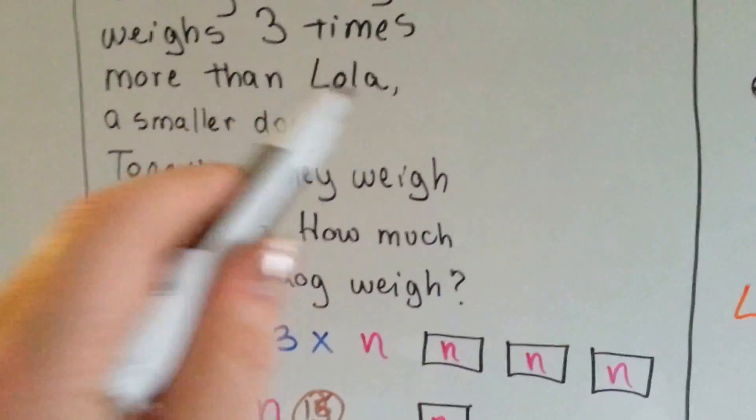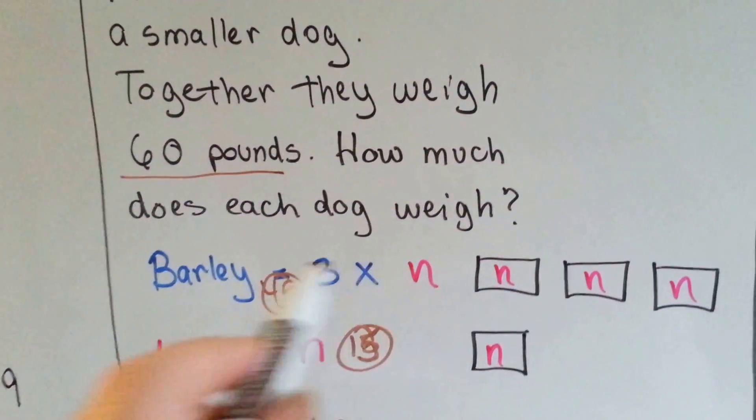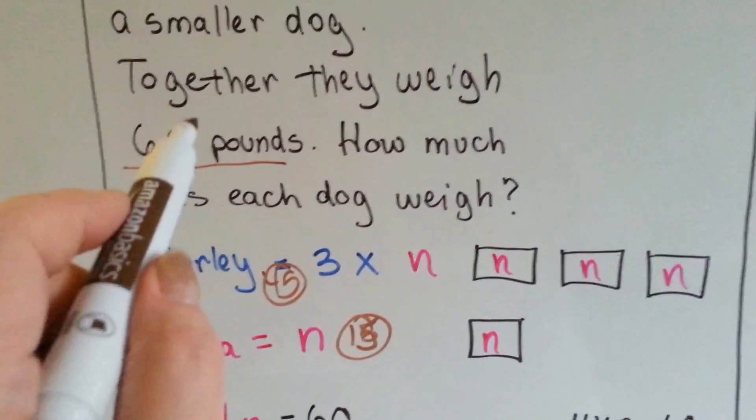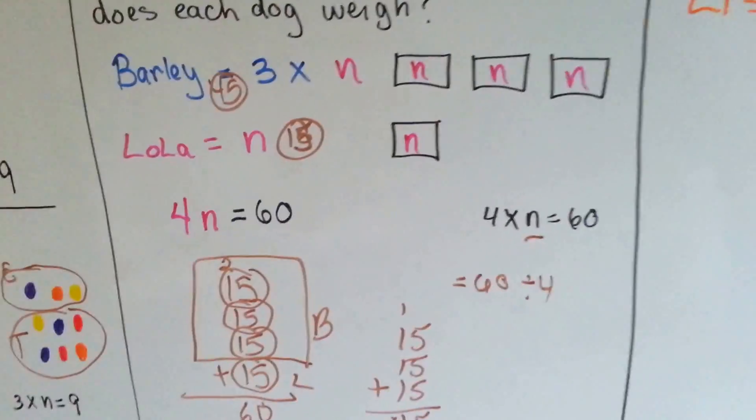It said Barley is three times, and Lola is just one times. So, Barley is three, and Lola is one n. That's a total of four n's. That's a total of four n's is equal to the total of sixty. Four n equals sixty. Let's try another one.